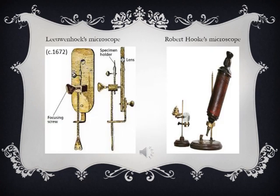Here are two images of the microscopes constructed by Leeuwenhoek and Robert Hooke. The first one is Leeuwenhoek's — you can see the lens and the specimen holder just behind it. The specimen to be seen was placed in the specimen holder, and the screw is used to move the specimen up and down so that a clear view is achieved. In Robert Hooke's microscope, the specimen was placed on the stage, and observed through the upper portion of the microscope.